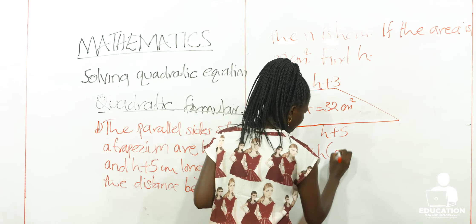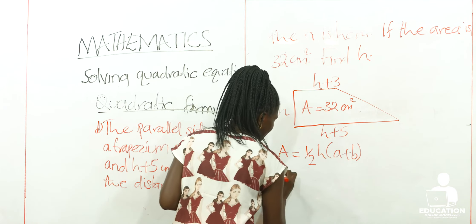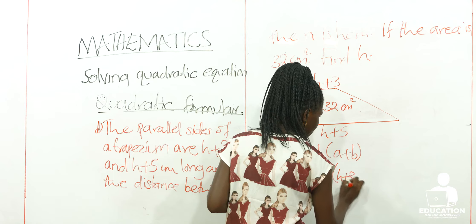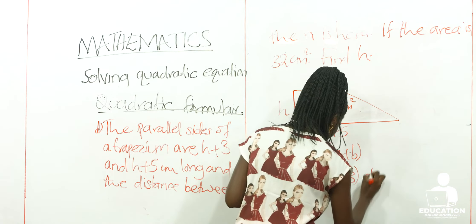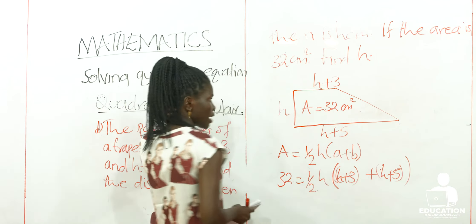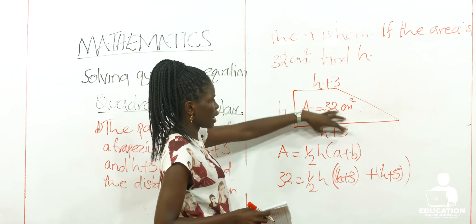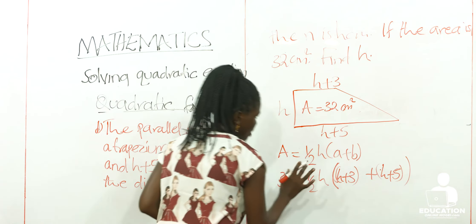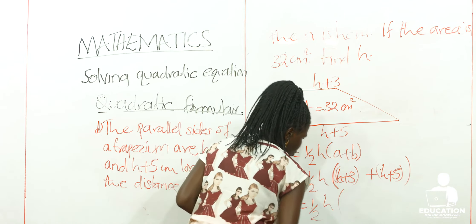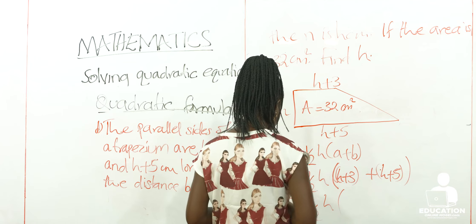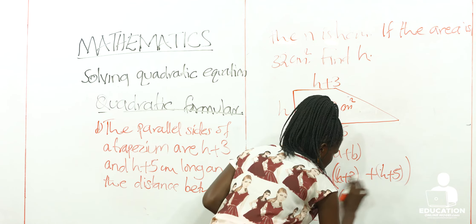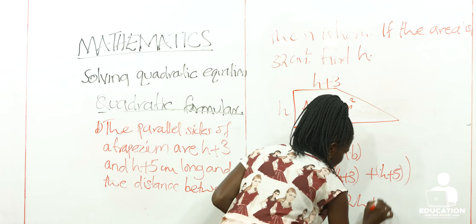We have two sides given and our area is 32. The longer side is H + 5 and the shorter side is H + 3. We know that the area for a trapezium is a half times height times (A + B). Our area is 32, a half times H — which we don't know the value of — into (H + 3) plus (H + 5). We are having two brackets because the shorter and the longer side both have two terms.